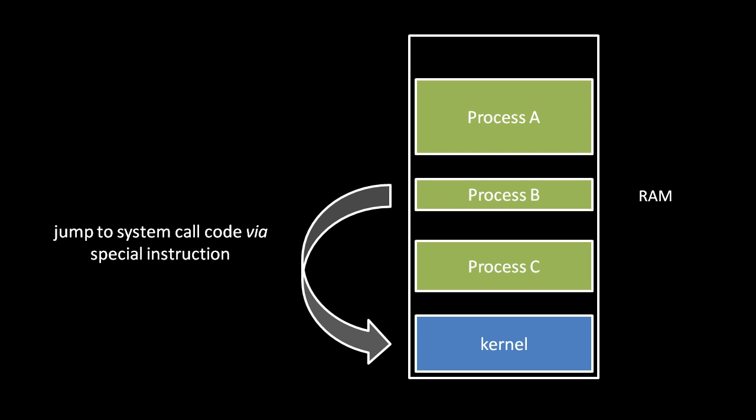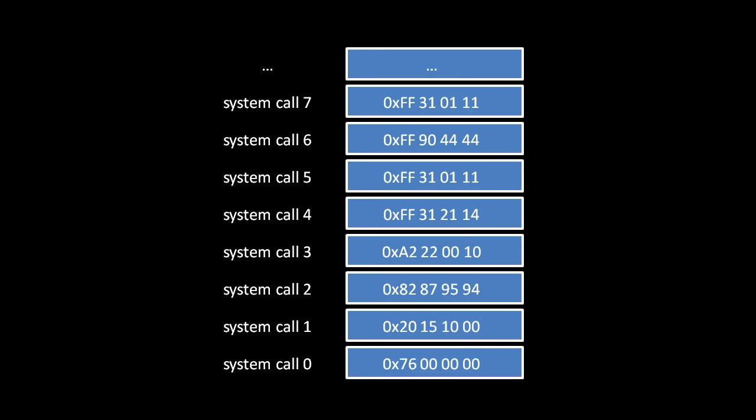Recall that the reason these special functions can only be invoked with a special instruction is that normally when a process executes, it can't read and execute data that's part of the operating system kernel itself. Each process is supposed to run effectively confined to its own box, its own part of memory. The instruction to invoke a system call breaks out of that box: you specify the number of the system call you wish to invoke, and that causes the CPU to look up an address corresponding to that number in a special table.